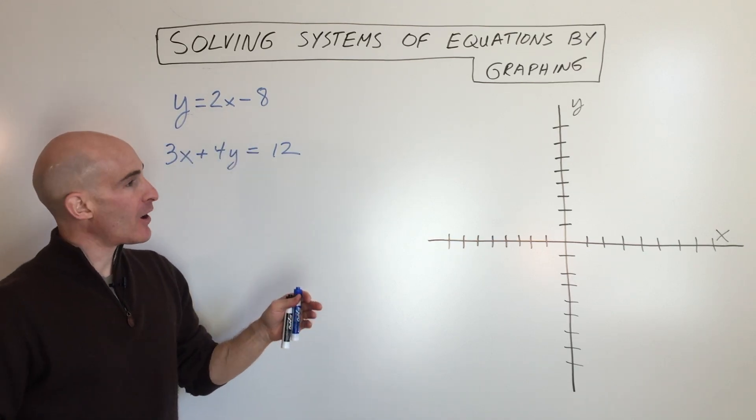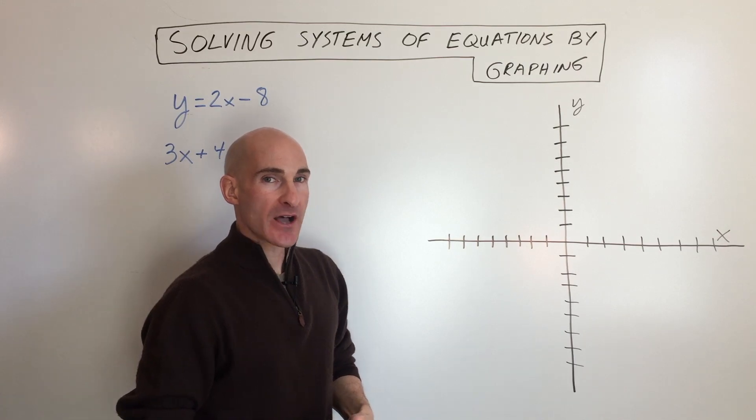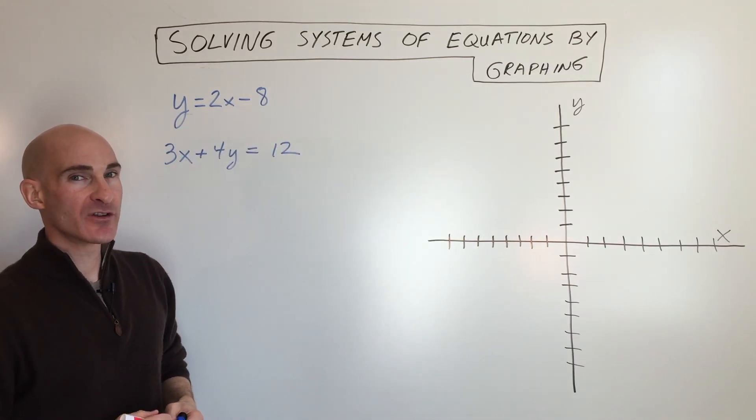We've got two equations here. We want to find out where these lines cross, and the way we're going to do that is we're going to graph them and find the common point of intersection.